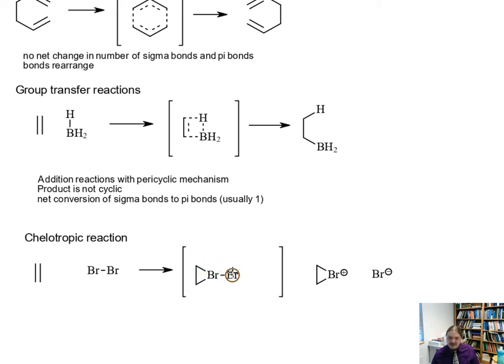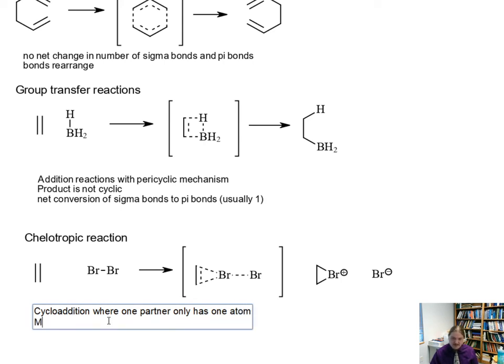Let me finish drawing the transition state. This is partially broken, partially formed. It has a cyclic transition state. It's concerted—everything's happening at once. But we're making three-membered rings. It's a cycloaddition where one partner only has one atom. It may have aspects of group transfer so that it looks like things are being transferred from one atom to the other.